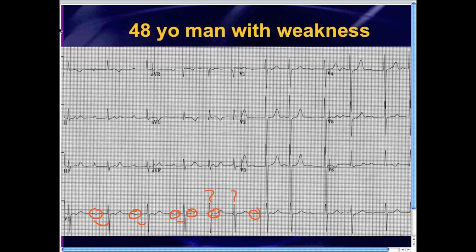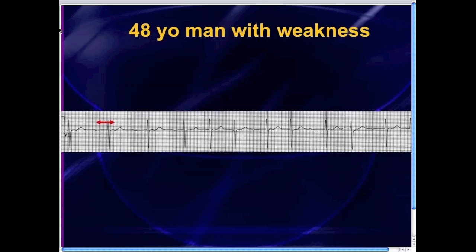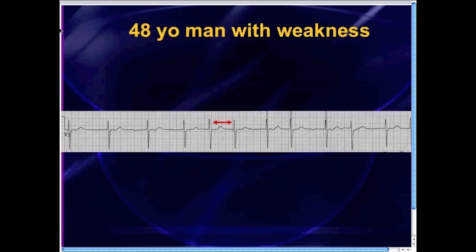Whenever you've got blips and you're thinking maybe those are P-waves, the simple way to find out for sure is to get some calipers and map it out. These red arrows represent my calipers. I'm going to map out the definite P-wave with the questionable P-wave and march this right across the EKG strip. Sure enough, the clear-cut P-waves map out with those blips all the way across the complexes, revealing that the junk right there is a P-wave, and also that the blip right after the QRS complex and the blip before that QRS complex are P-waves as well.